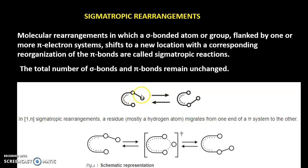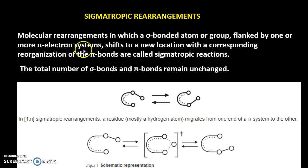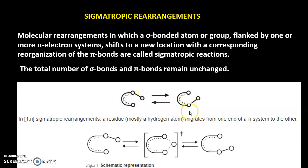Here is our atom. In the starting material this atom is attached to one position, but in the product this group is at a new position. What is happening is the position of this atom is shifted to a new location. Such reactions, where sigma-bonded atoms or groups along with the pi electron system take a new position in the product, are called sigmatropic rearrangements. The number of sigma bonds and pi bonds in the starting material equals that in the product.